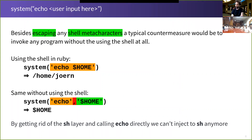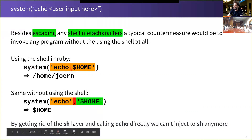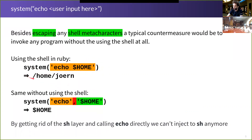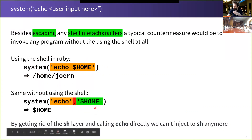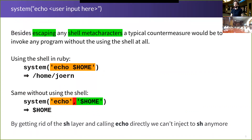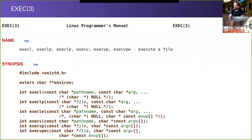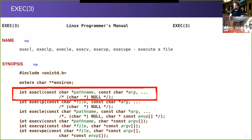In Ruby, for instance, we can escape this by not calling the shell directly, but rather calling the binary we want without the detour via the shell. Using the syntax that separates the command and its arguments, instead of expanding $HOME to the home directory, we get the literal string dollar-home. So sh won't be invoked; echo is called directly and we can no longer inject any shell meta characters.